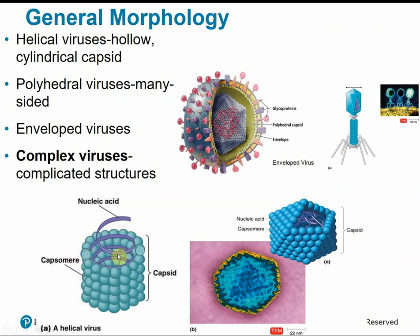Viruses are classified into types based on capsid structure. Helical viruses have hollow cylindrical capsids — rabies and Ebola are examples. Polyhedral viruses have many sides, and polio is an example. Enveloped viruses are roughly spherical, with examples including influenza and herpes. Complex viruses have complicated structures that don't fit the other categories — an example is the bacteriophage, which looks like a little alien structure with legs and injects its genetic material into the cell.